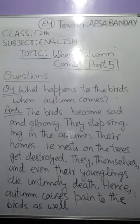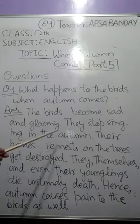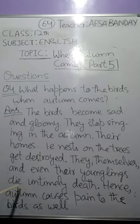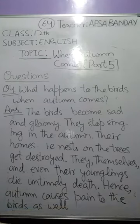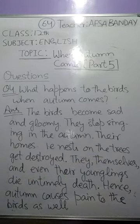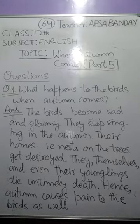Question number four: what happens to the birds when autumn comes? The birds become sad and gloomy. They stop singing in autumn because their homes — their nests on the trees — get destroyed. Their younglings in the nests die an untimely death because they get exposed to harsh climate. So autumn causes pain to the birds, just as it brings a negative impact on the trees.